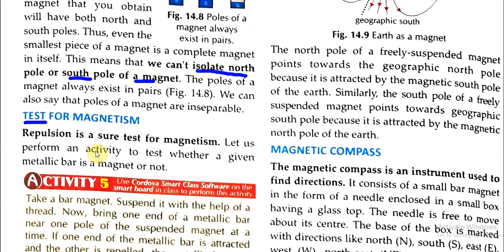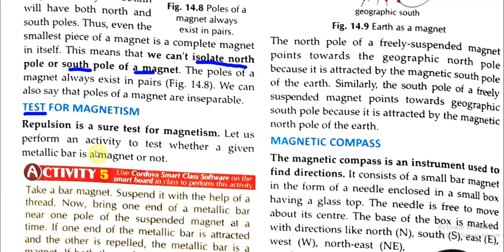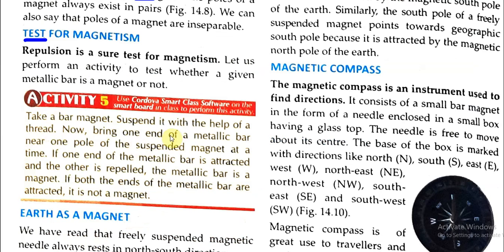Let us perform an activity to test whether a given metallic bar is a magnet or not. Take a bar magnet and suspend it with the help of a thread. Now bring one end of the metallic bar near one pole of the suspended magnet at a time. If one end of the metallic bar is attracted and the other is repelled, the metallic bar is a magnet. If both ends of the metallic bar are attracted, it is not a magnet.